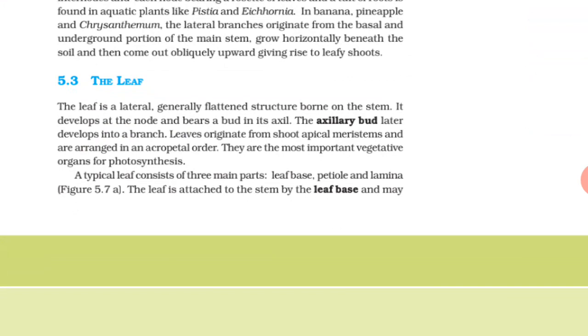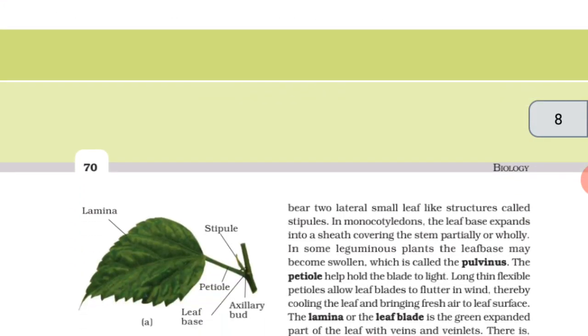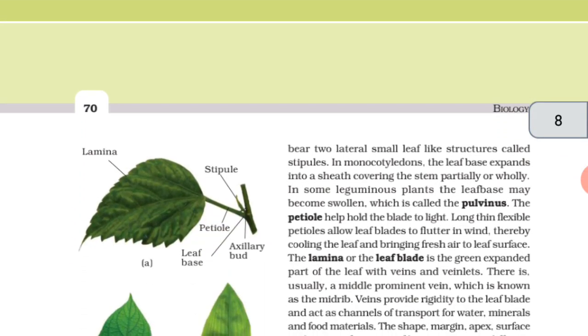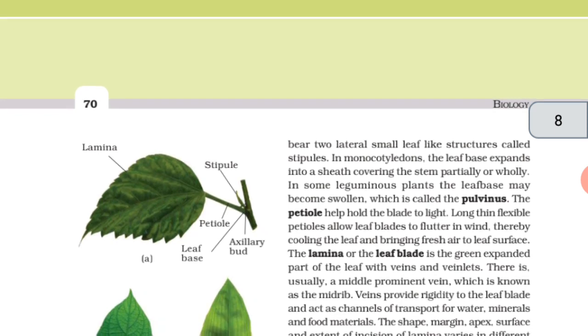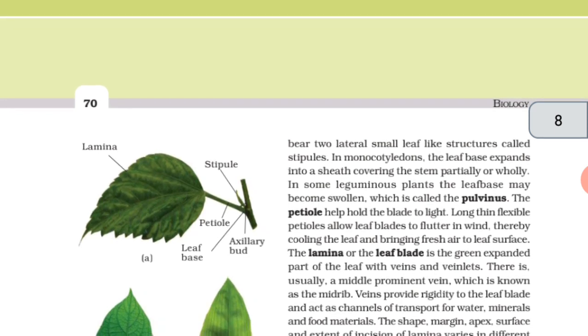The leaf is attached to the stem by the leaf base and may bear two laterally small leaf-like structures called stipules. In monocotyledons, the leaf base expands into a sheath covering the stem partially or wholly. In some leguminous plants, the leaf base may become swollen, which is called the pulvinus.